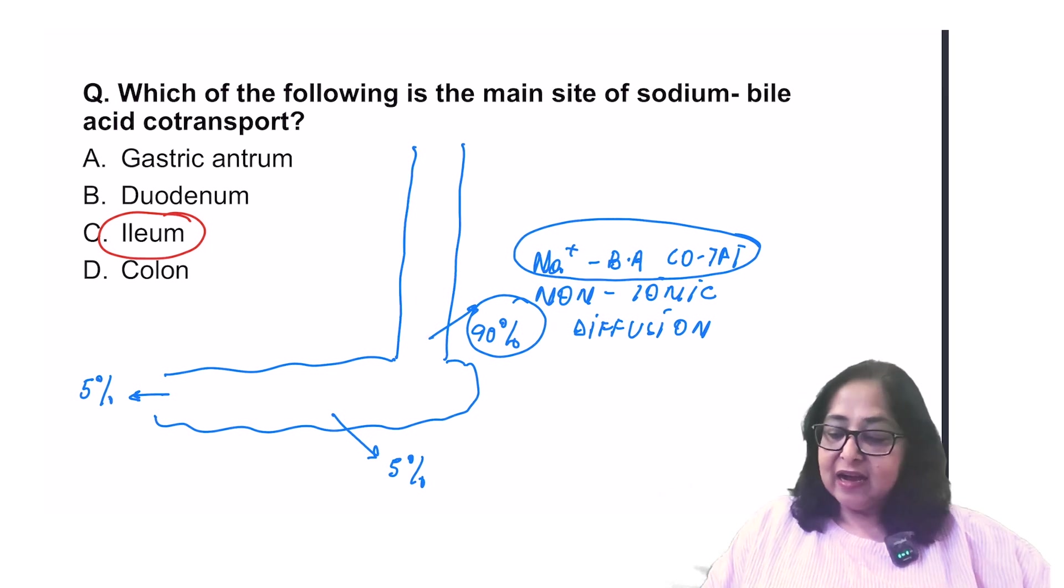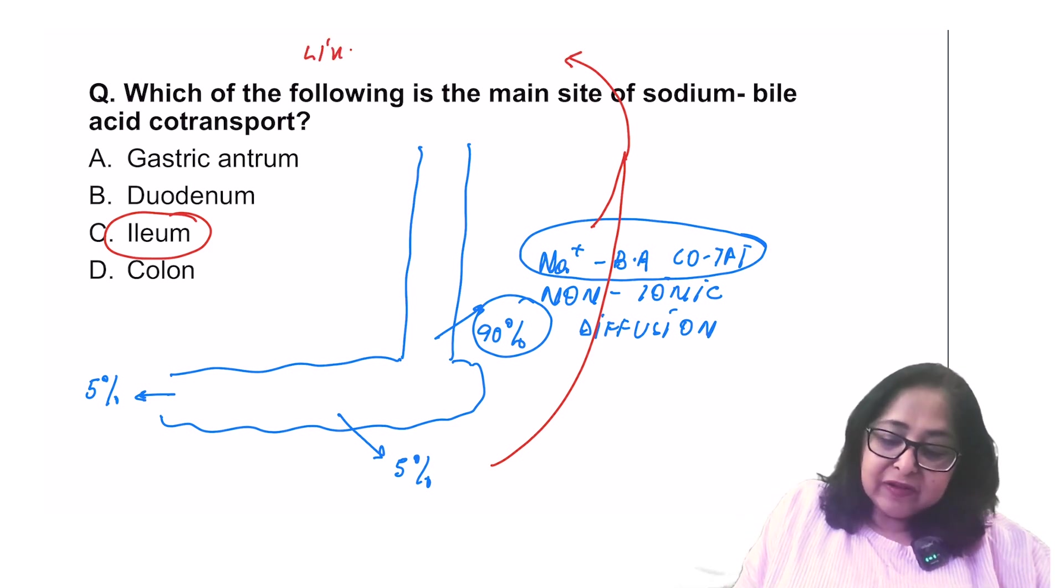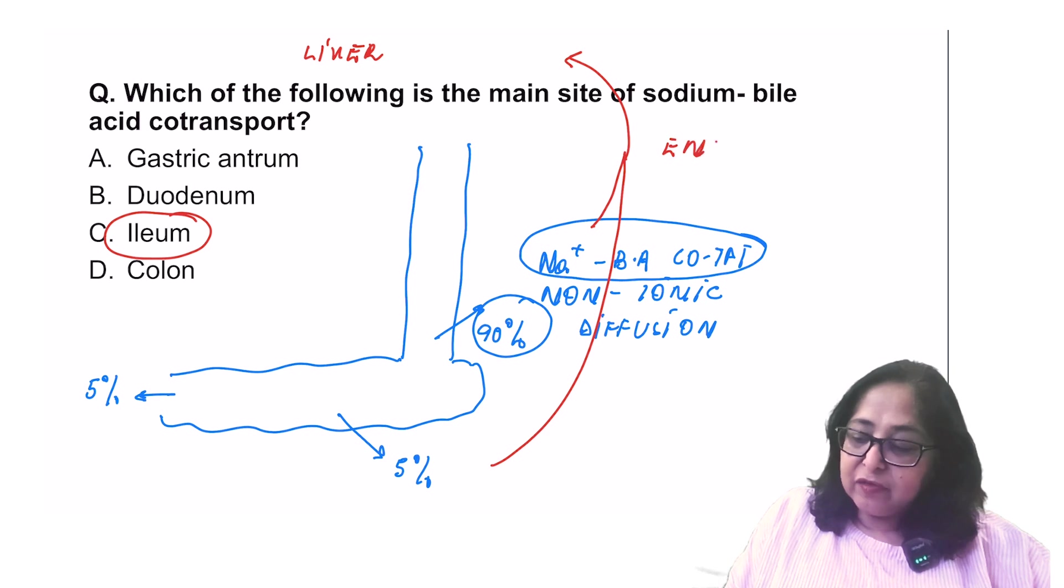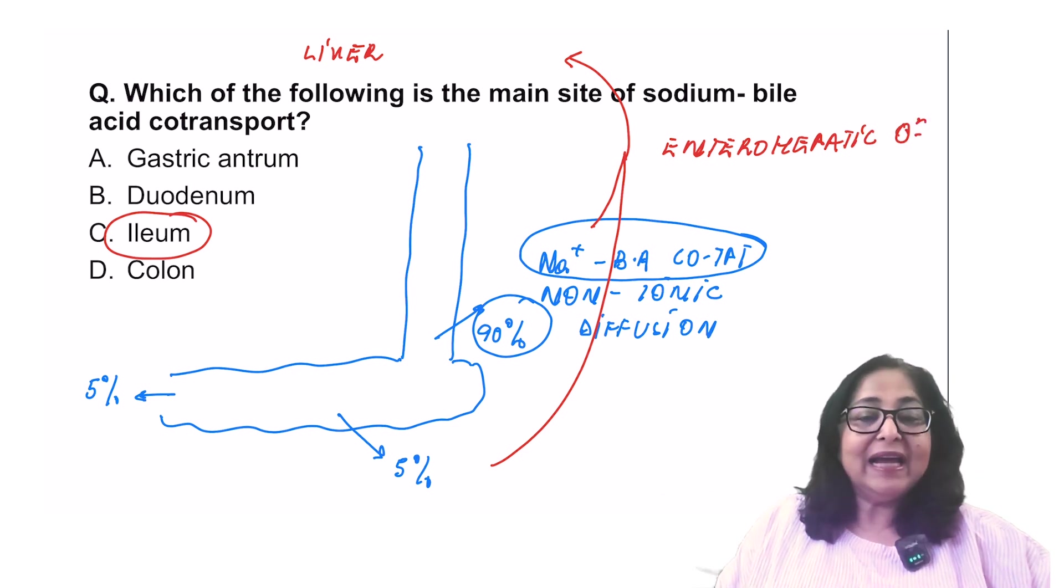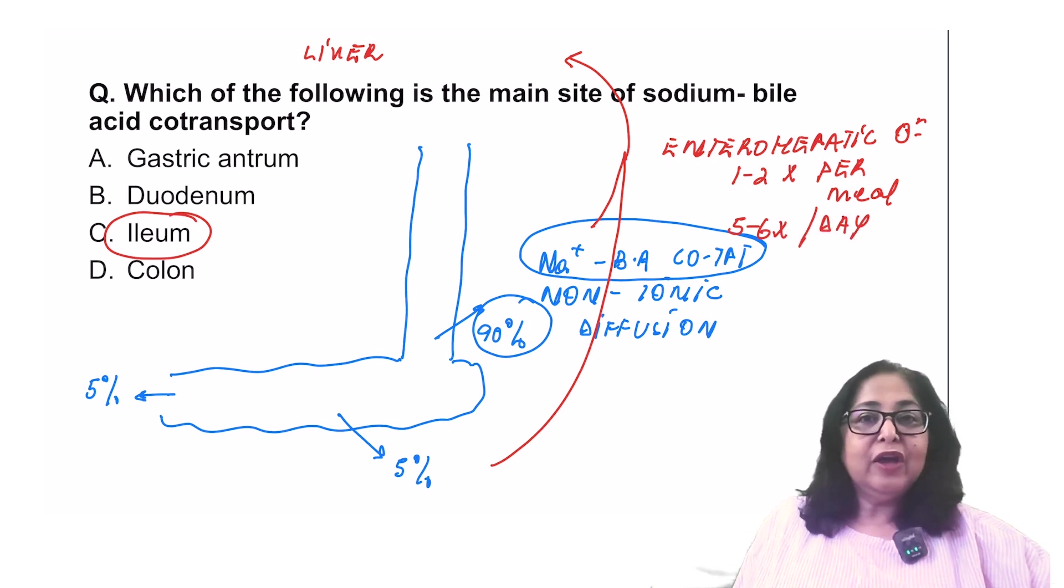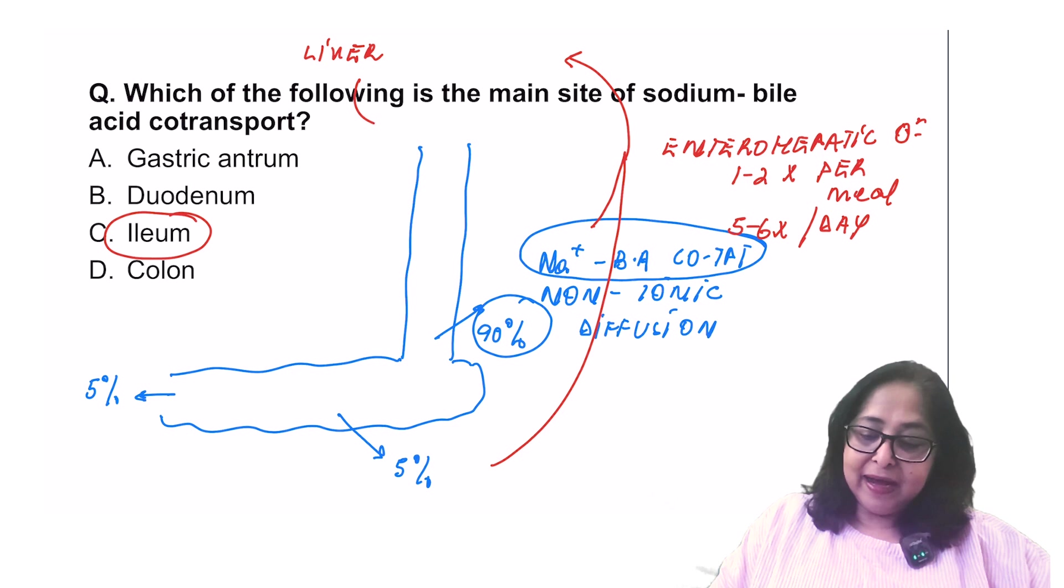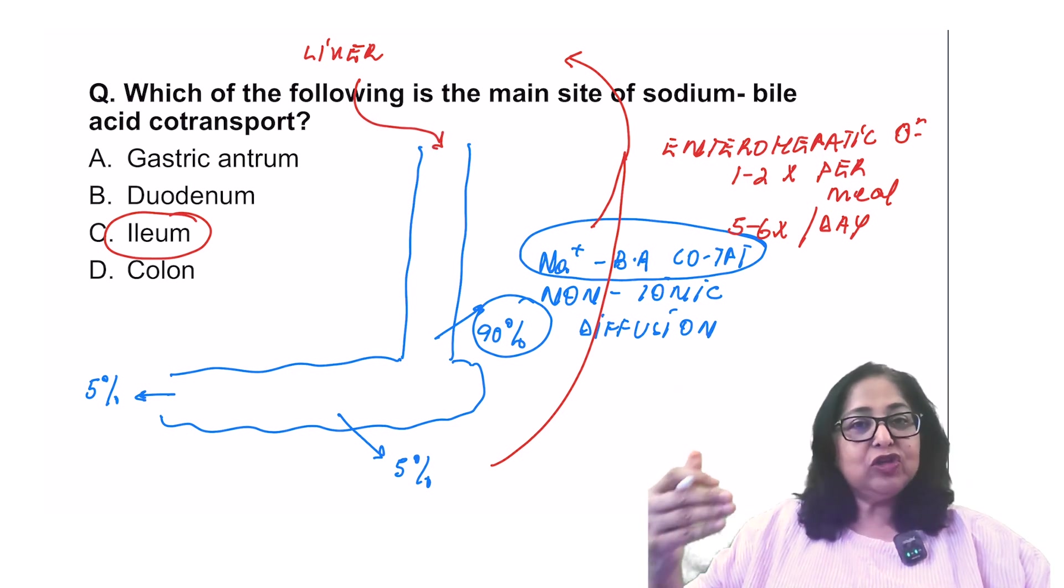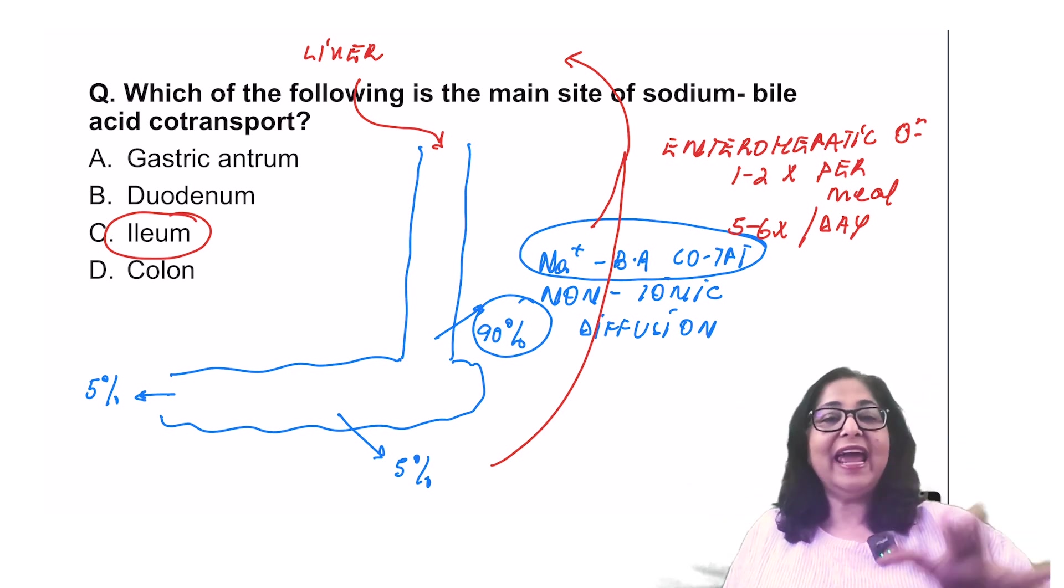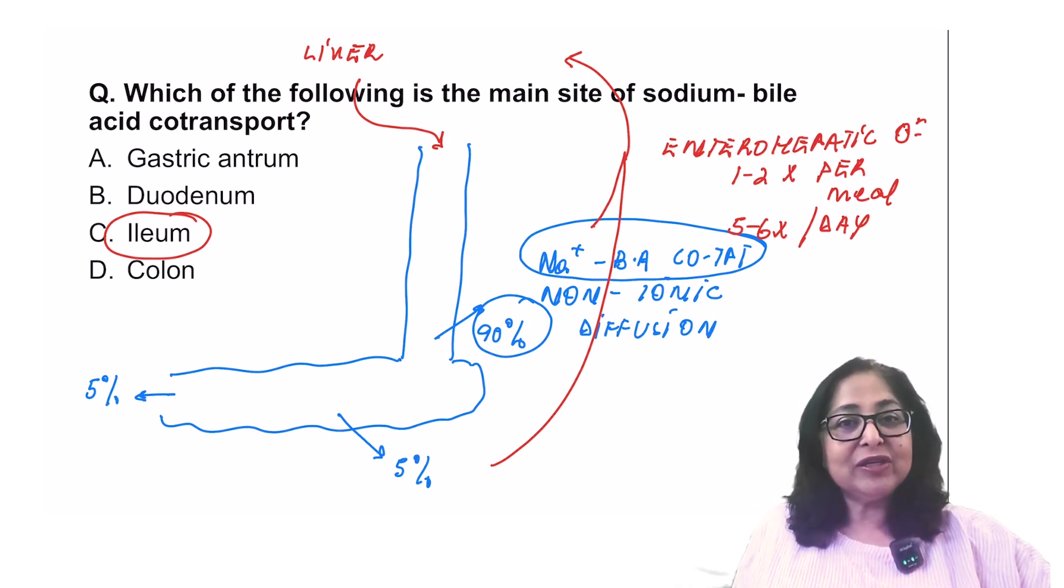Once the bile acids are absorbed from the distal ileum, from the colon, they will be taken into the liver. This is known as the enterohepatic circulation of bile. This enterohepatic circulation of bile occurs 1 to 2 times per meal or 5 to 6 times per day. From the liver, there is going to be secretion of the bile acids into the bile canaliculi and then the bile will flow into the duodenum, then the jejunum, distal ileum and again the reabsorption. This is called the enterohepatic circulation of bile. So answer to this question is C or ileum.